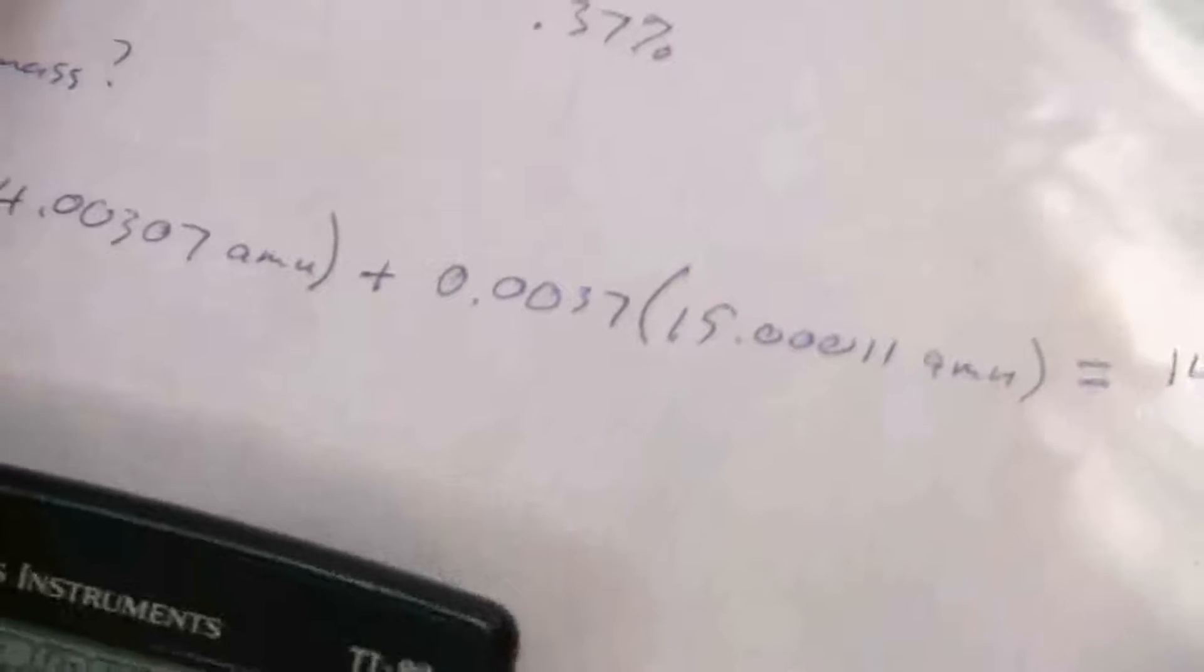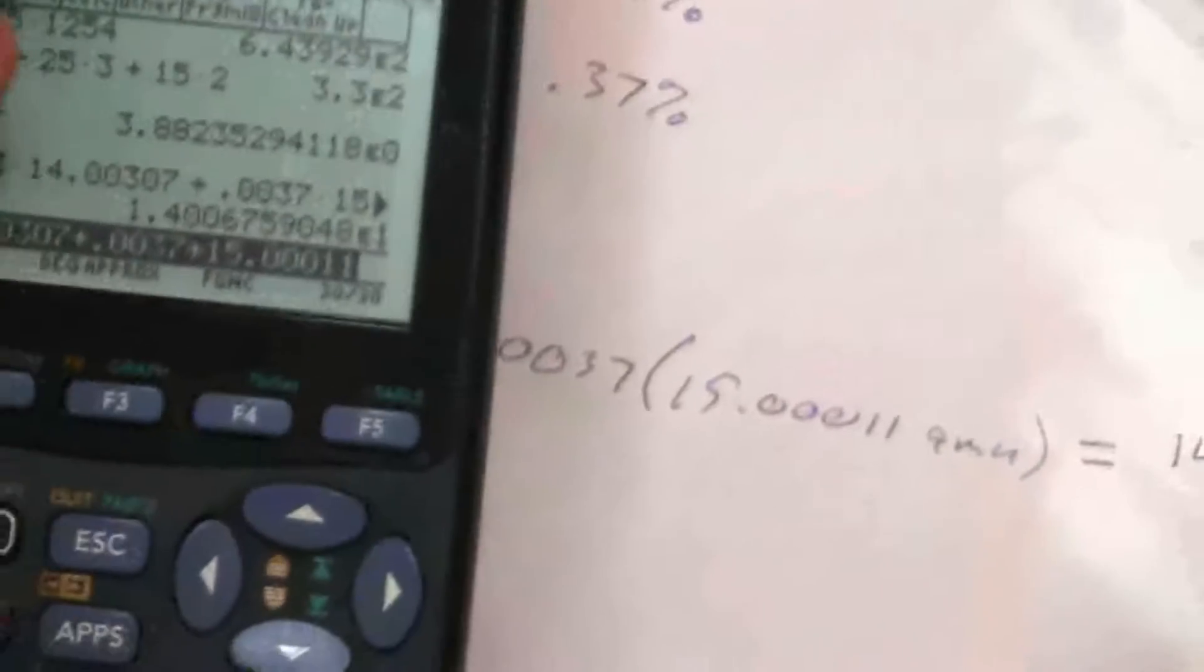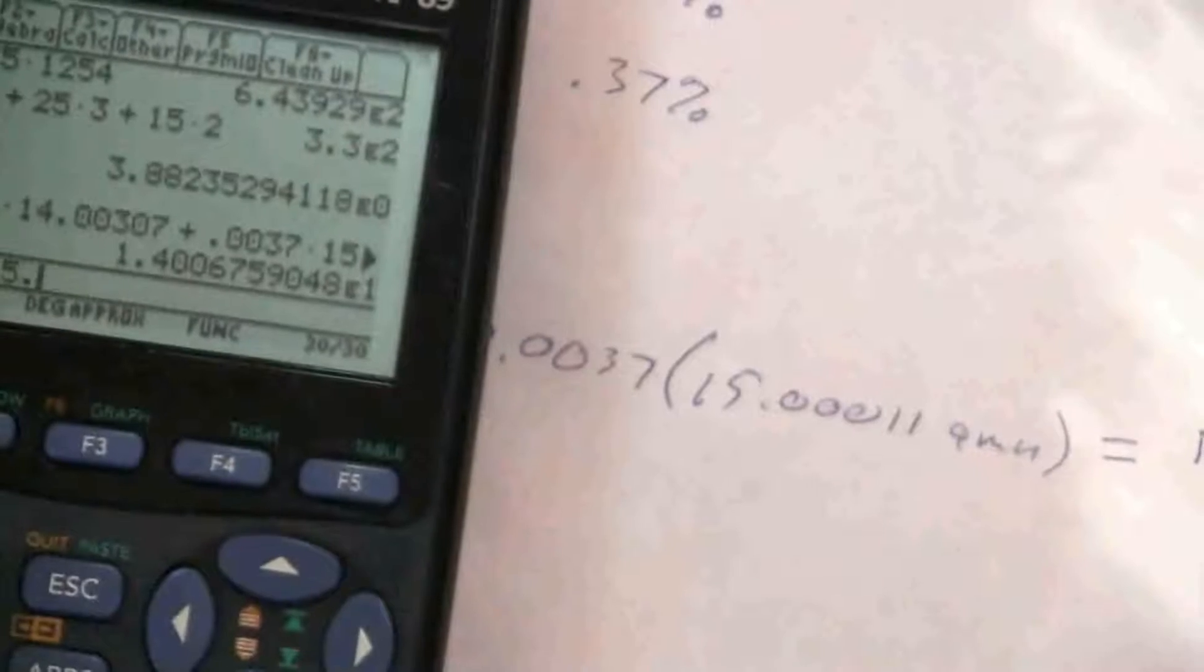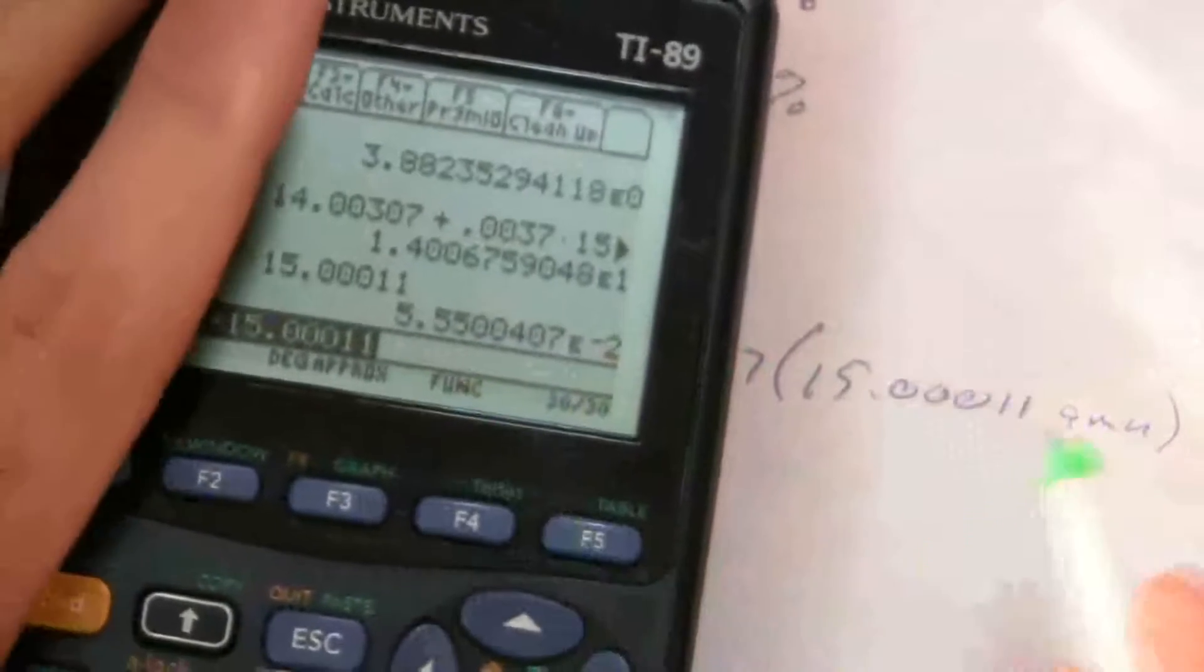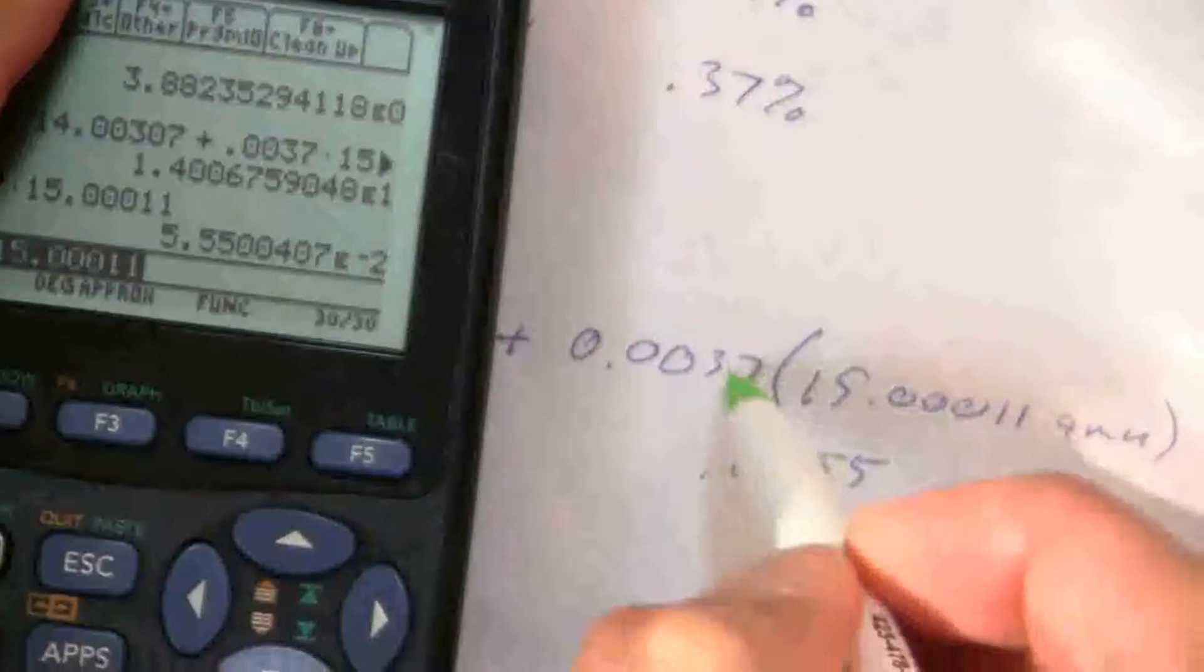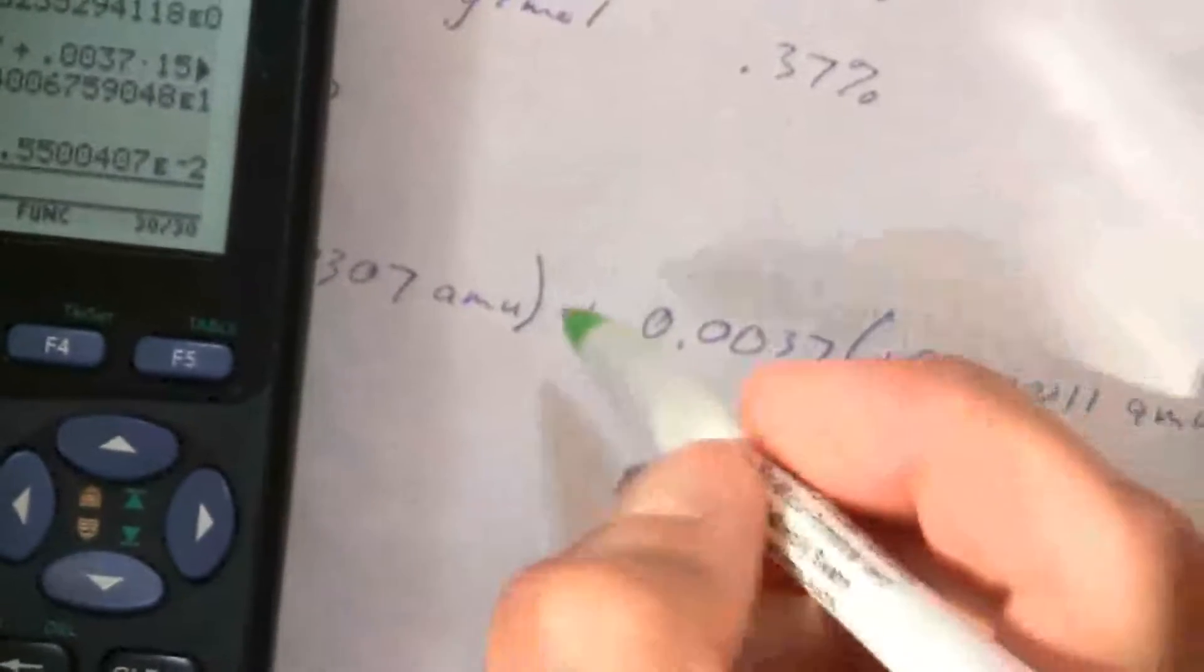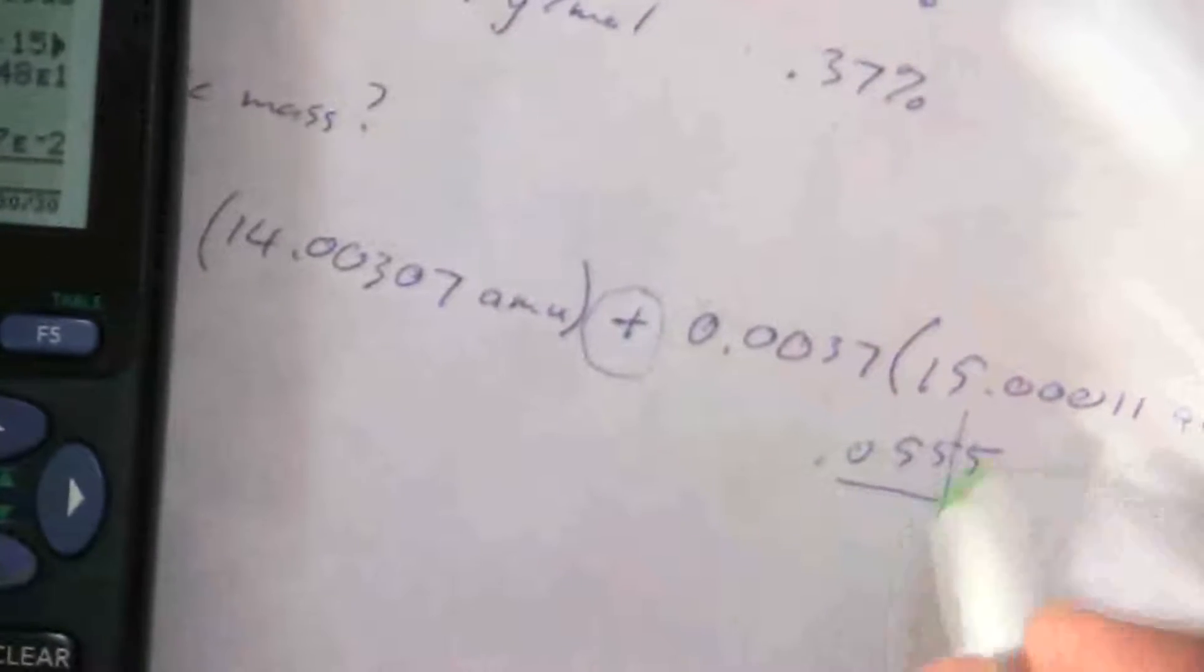Why don't I do that just for some extra practice? Let me look at this in part. So this is practice with significant figures. 0.0037 times 15.00011. Here I have two significant figures. That means I have three decimal places. That's because when I'm adding and subtracting numbers, I go with the number of decimal places.